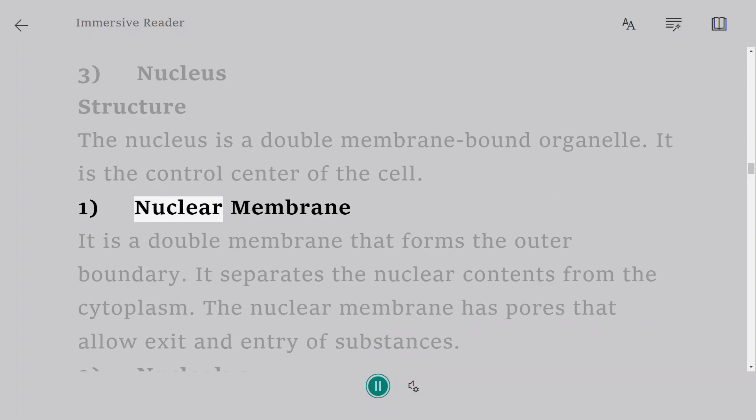1. Nuclear membrane. It is a double membrane that forms the outer boundary. It separates the nuclear contents from the cytoplasm. The nuclear membrane has pores that allow exit and entry of substances.